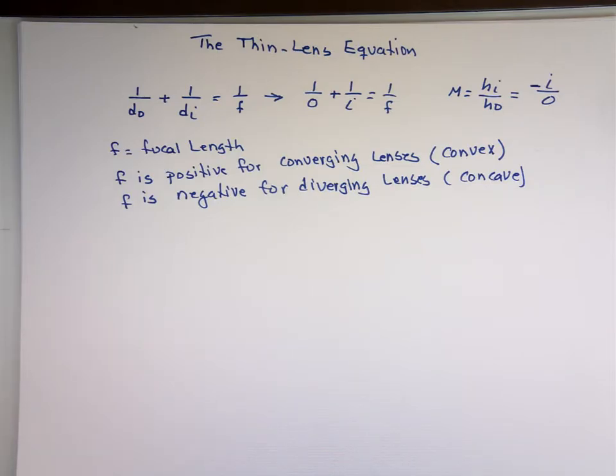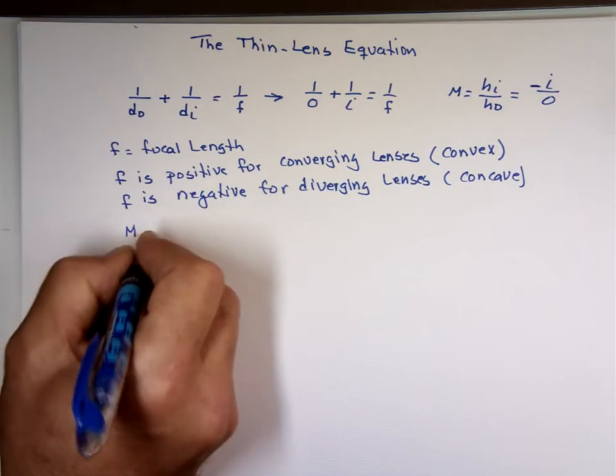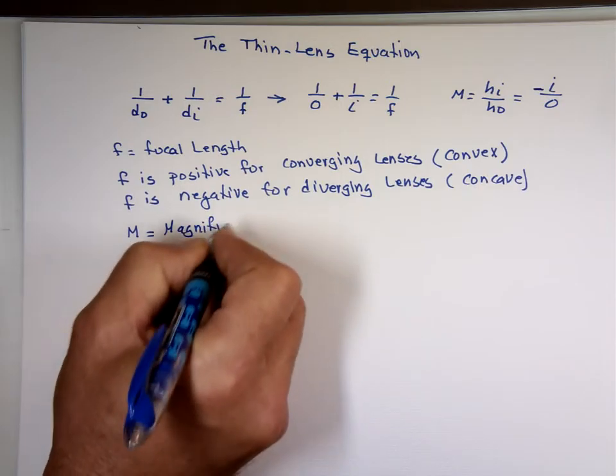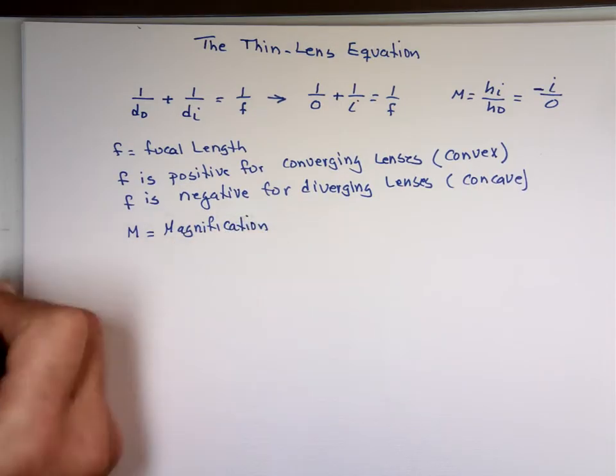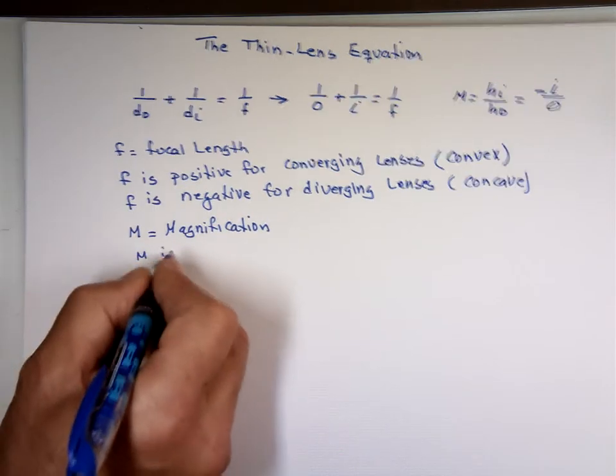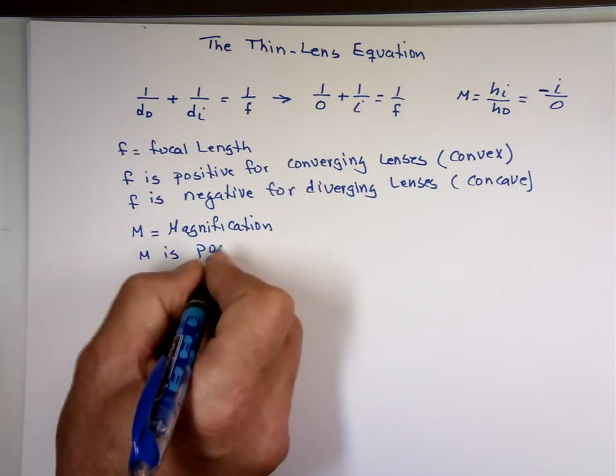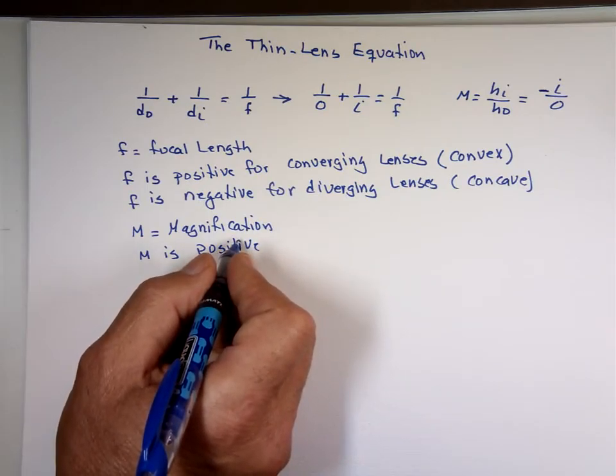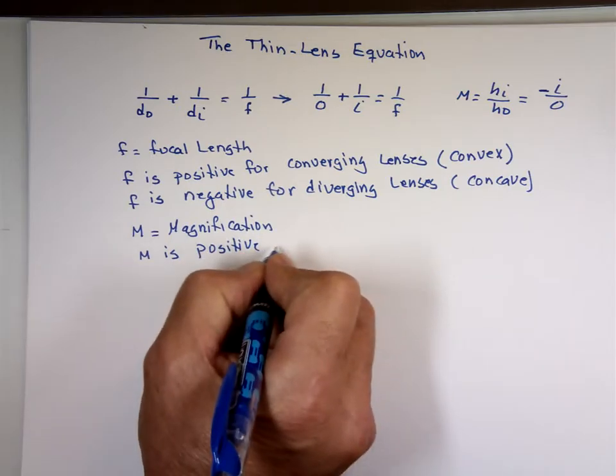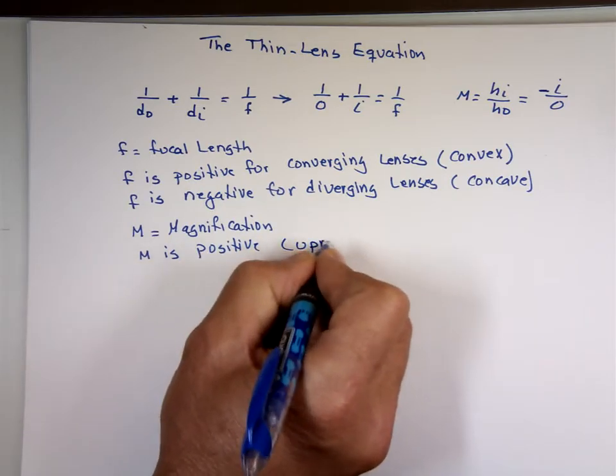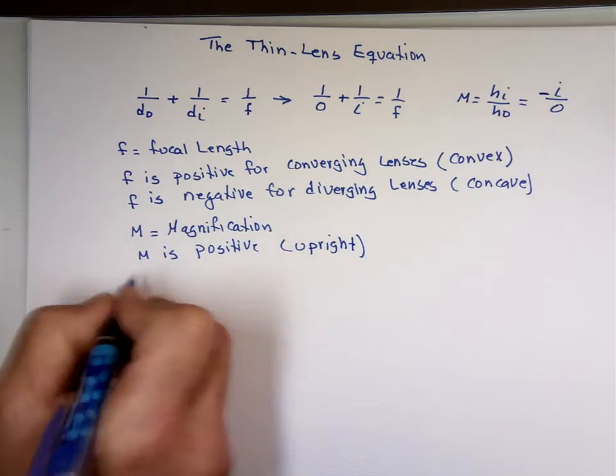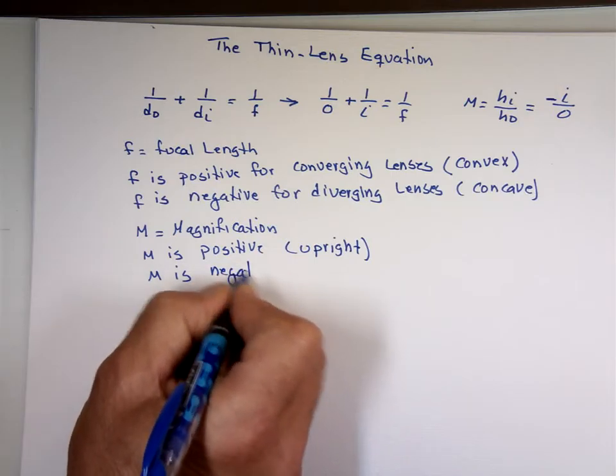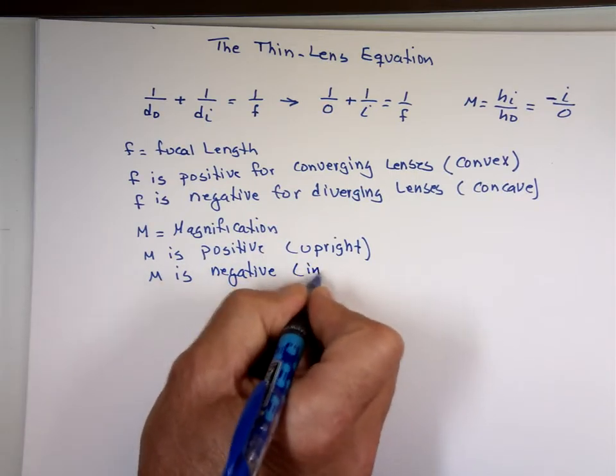M for magnifications. M is positive - what does that mean, M is positive? Upright. M is negative, what does that mean? Inverted, upside down.